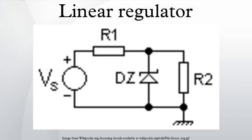R1 sets the Zener current and is determined where Vz is the Zener voltage, Ib is the transistor's base current, K equals 1.2 to 2, IR2 is the required load current and is also the transistor's emitter current, and Hfe is the minimum acceptable DC current gain for the transistor. This circuit has much better regulation than the simple shunt regulator, since the base current of the transistor forms a very light load on the Zener, thereby minimizing variation in Zener voltage due to variation in the load.